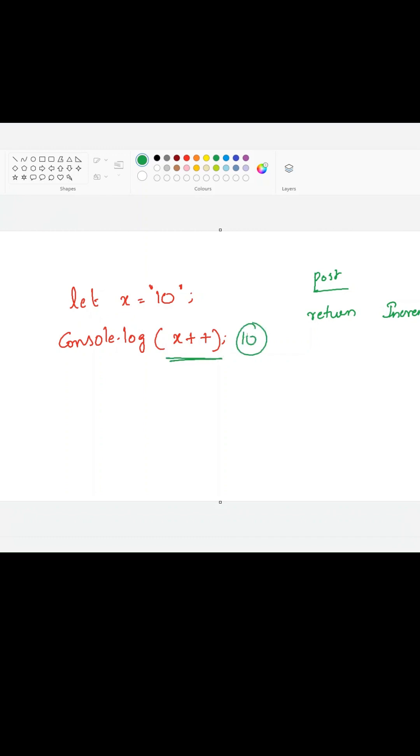But once it is moving to the next line, its value will become 11 because it is returning the value which is 10 and then it will increment the value. Due to this, it will become 11 in the next line. So if I log console.log of x again here, it will become 11.